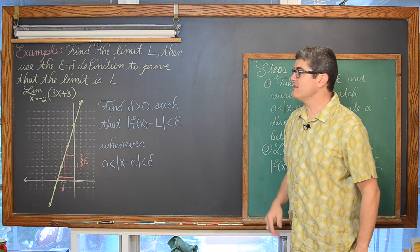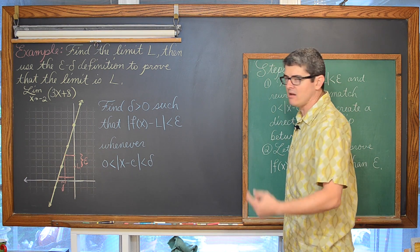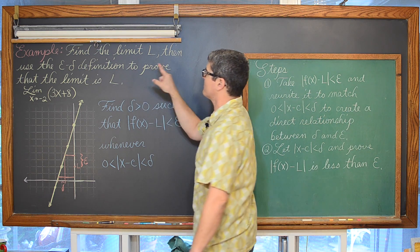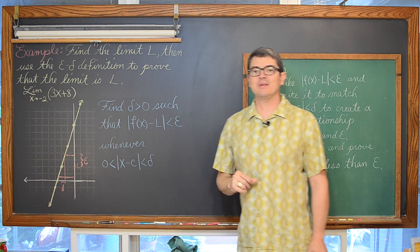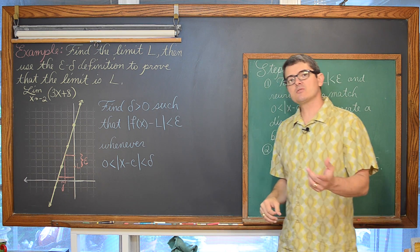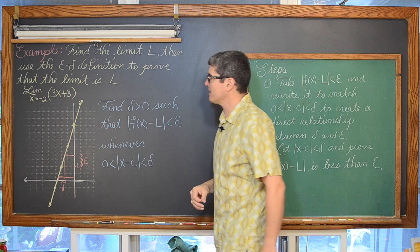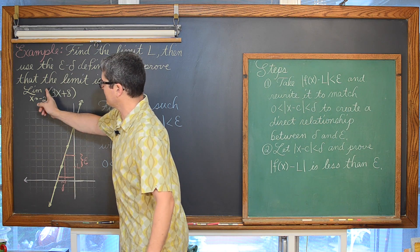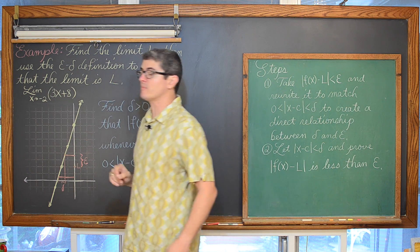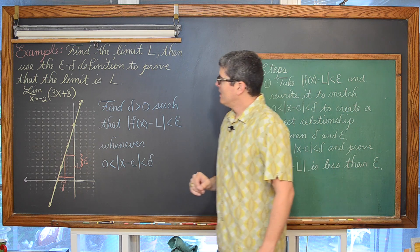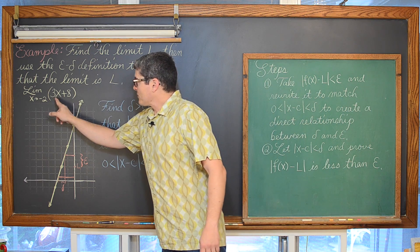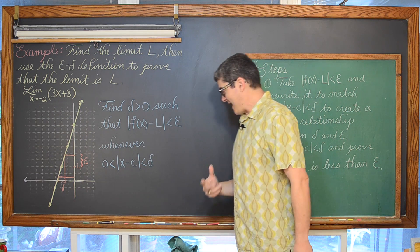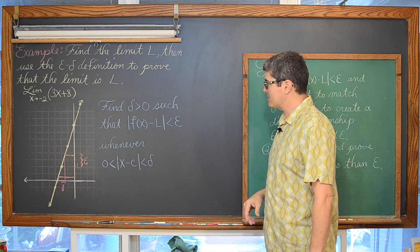First example: we are going to find the limit L, then we are going to use the epsilon-delta definition to prove that the limit actually is L. Here is our first example, that linear function y is equal to 3x plus 8. We are going to find the limit as x approaches negative 2 of 3x plus 8, and then prove that the answer we get actually is the limit.